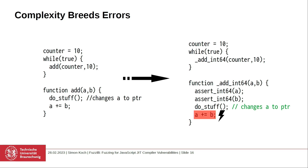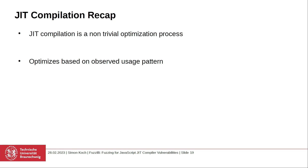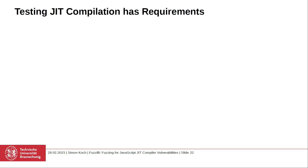To recapitulate, JIT compilation is a non-trivial optimization process that optimizes based on observed usage patterns and it's complex. Complexity breeds errors. Such errors can introduce vulnerabilities, which of course we want to find. So how can we test for JIT compiler vulnerabilities?